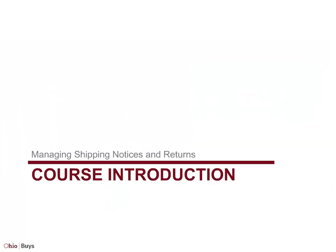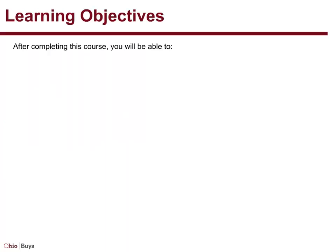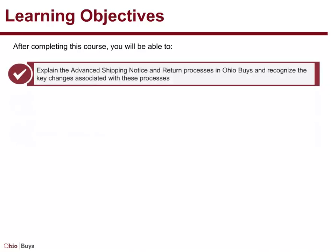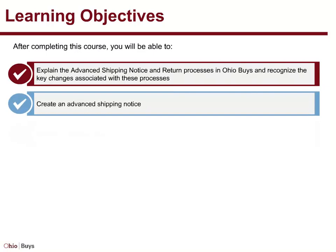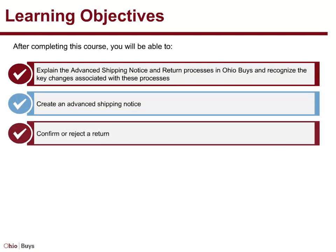Course Introduction. After completing this course, you will be able to: Explain the Advanced Shipping Notice and Return processes in OhioBuys and recognize the key changes associated with these processes. Create an Advanced Shipping Notice. And, Confirm or Reject a Return.